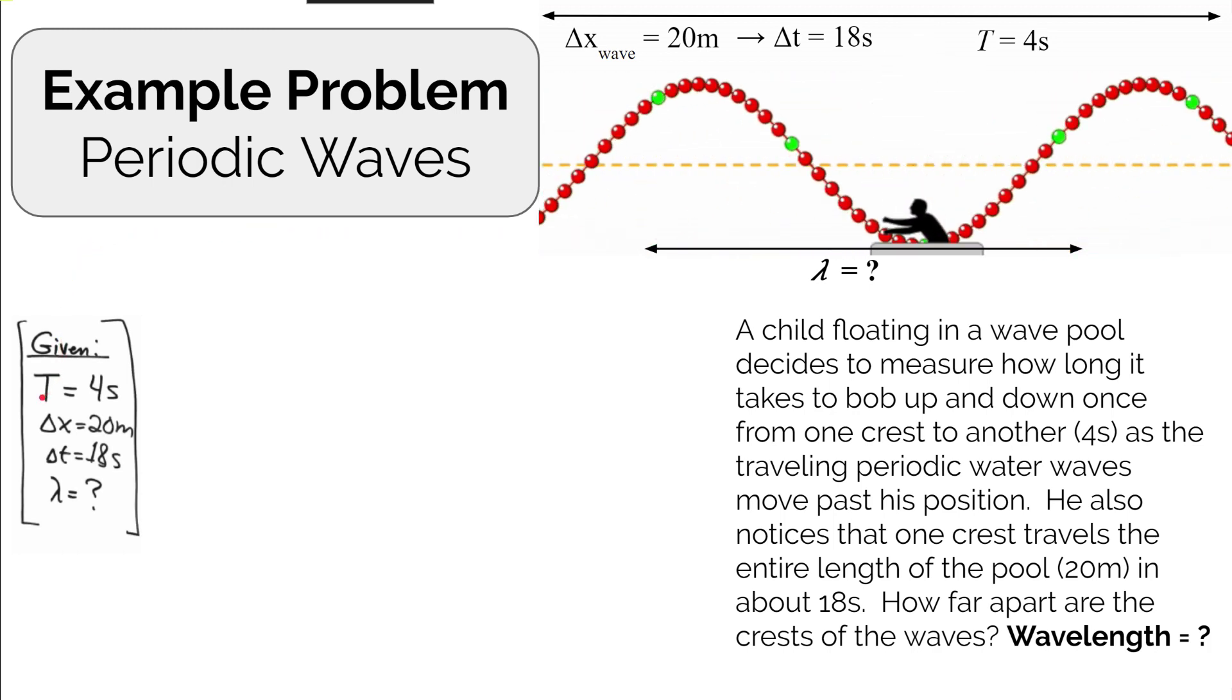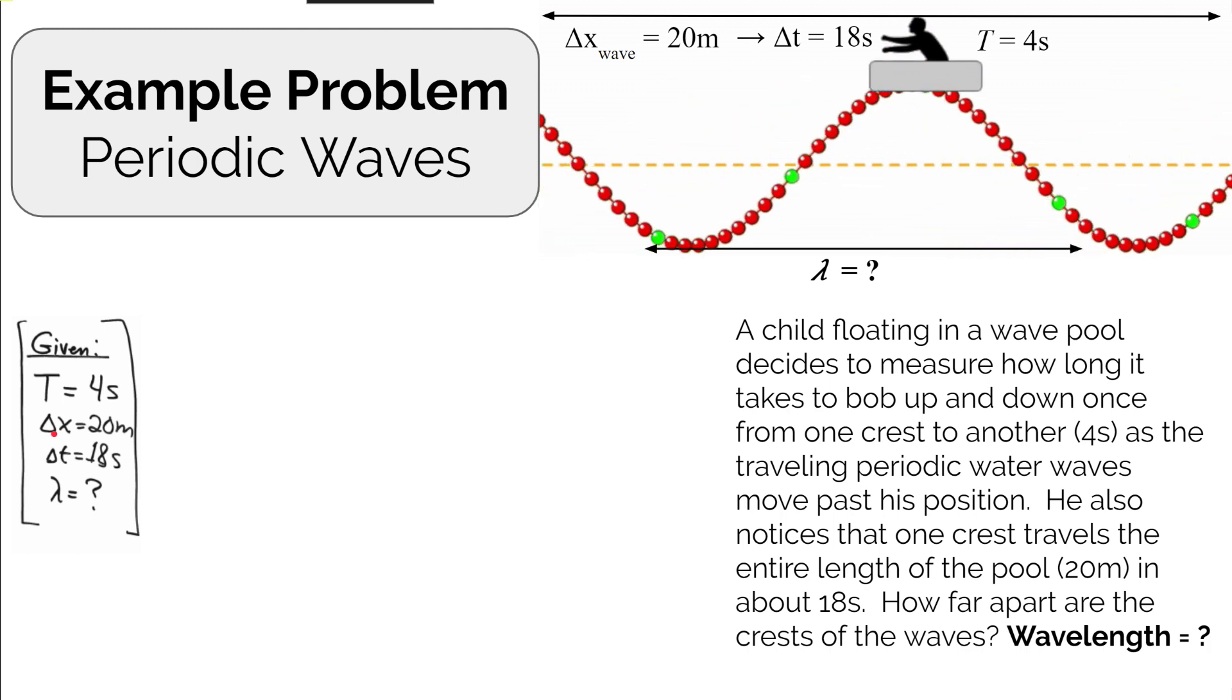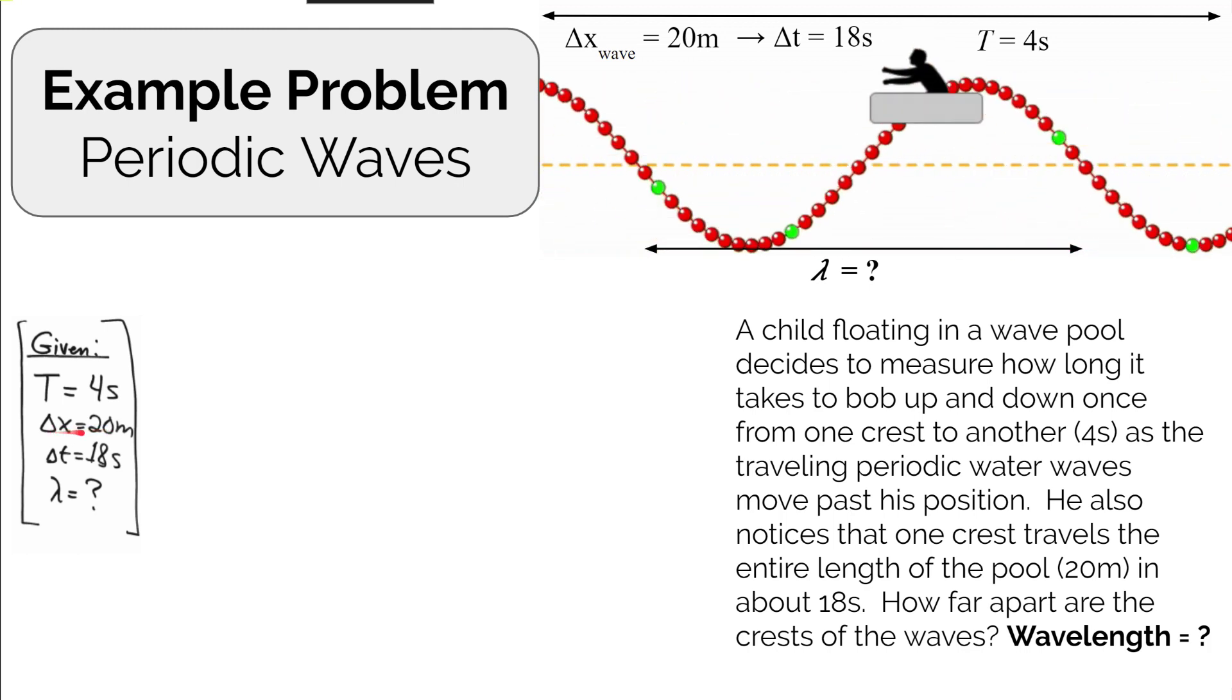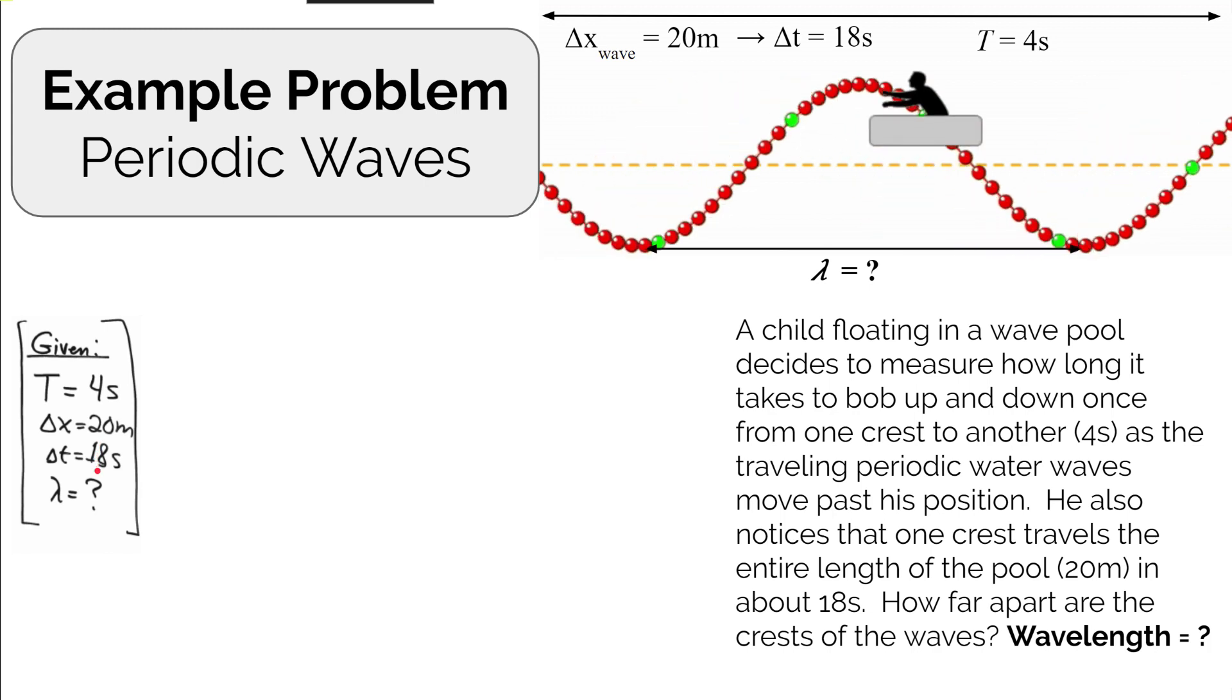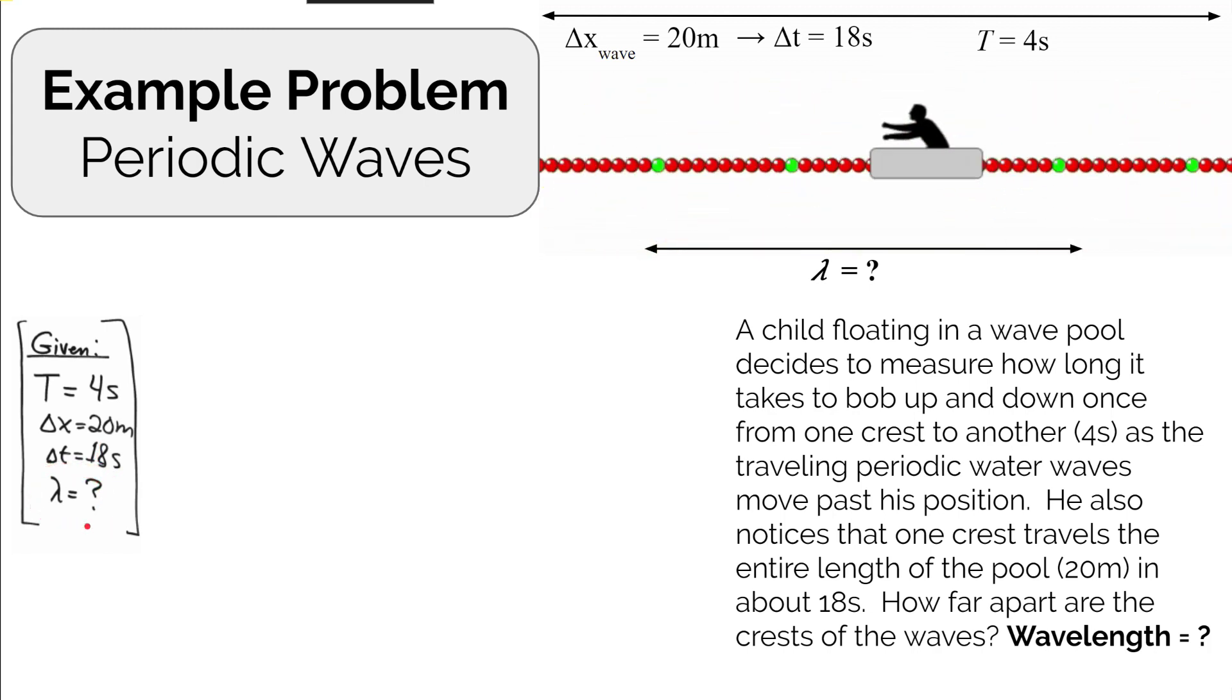Capital T is the variable we use to represent period. That's four seconds. The displacement of the periodic waves from one side of the pool to the other is 20 meters. It takes 18 seconds, and we're looking for lambda, the wavelength of the periodic waves.